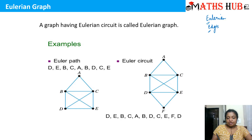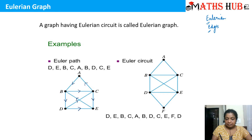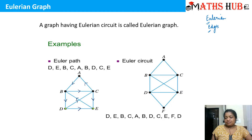Now, looking at two graphs. In the first graph, there is no Eulerian circuit present, but we can develop an Eulerian path. Starting from D: D to E, E to B, B to C, C to A, A to B, B to D, D to C, and then C to E. We started from vertex D and terminated at vertex E. In the second diagram, you can easily find an Eulerian circuit. Starting from vertex D: D to E, E to B, B to C, C to A, A to B, B to D, D to C, C to E, E to F, and finally F to D — we started from D and came back to D. When the initial and final vertices are the same, that is an Eulerian circuit.